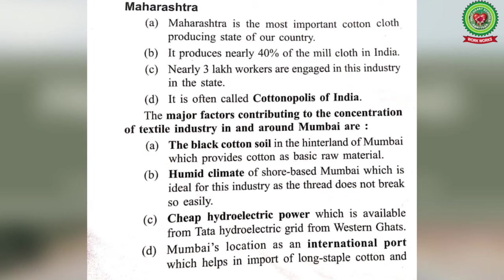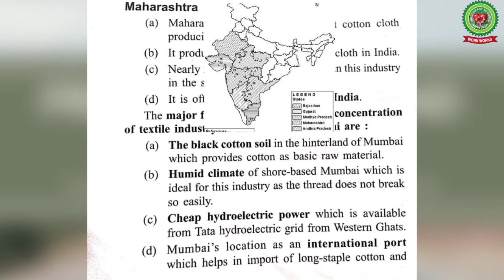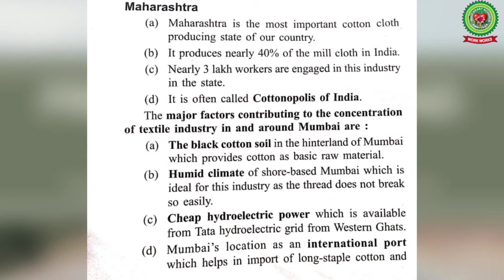Mumbai is the most important center in Maharashtra. The major factors contributing to the concentration of textile industry in and around Mumbai are: black cotton soil in the hinterland of Mumbai providing cotton as basic raw material; humid offshore climate ideal for the industry as thread does not break easily; and cheap hydroelectric power available from the Tata Hydroelectric Grid from the Western Ghats.